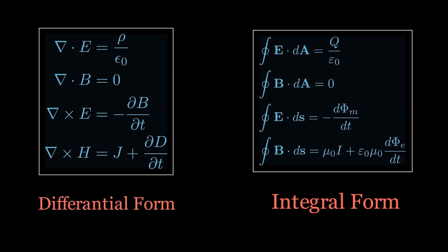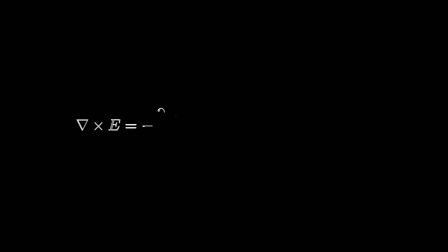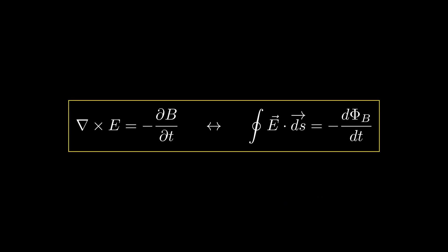But what happens when electric charge and magnetic dipole start to move? Here come the third and fourth equations. The third equation represents the outcome of Faraday's experiment in 1831 and simply tells us that a changing magnetic field produces circularly moving electric field.